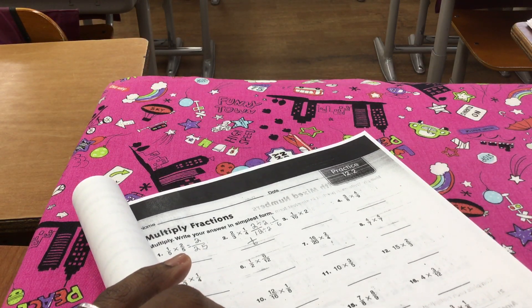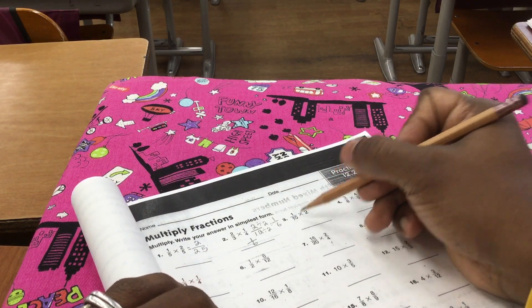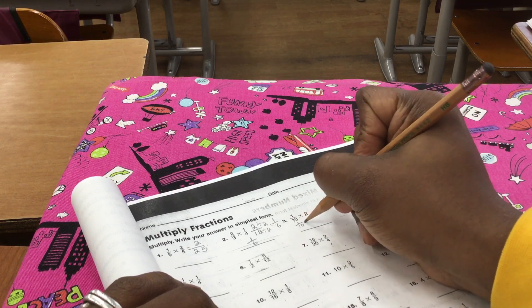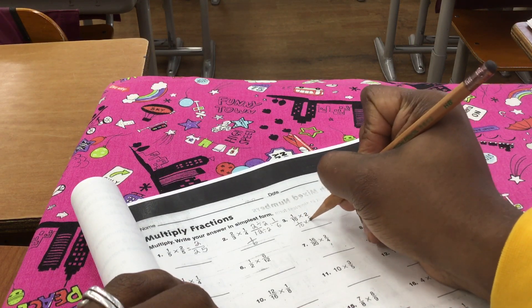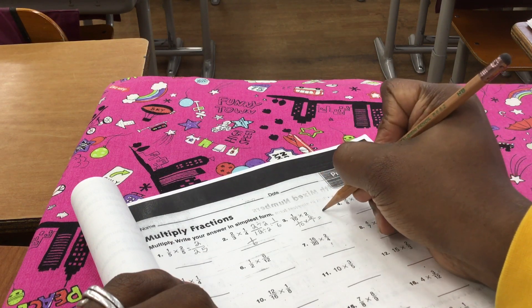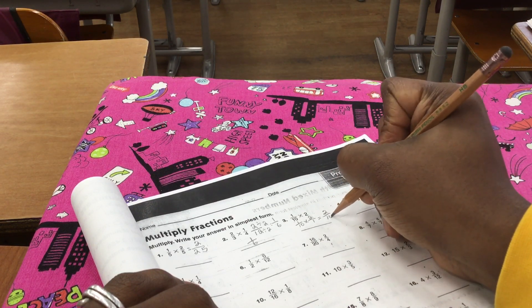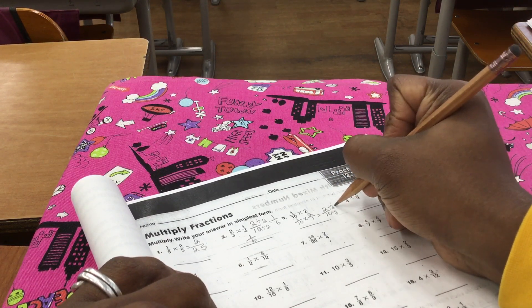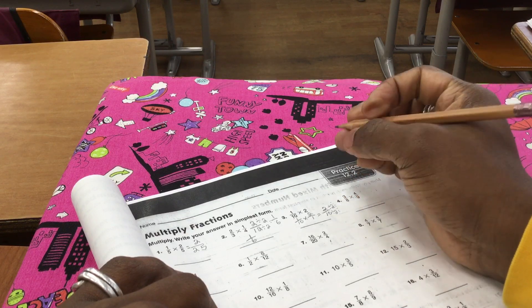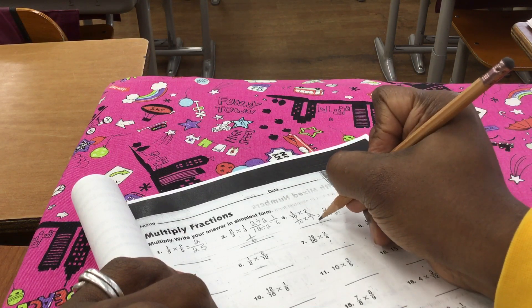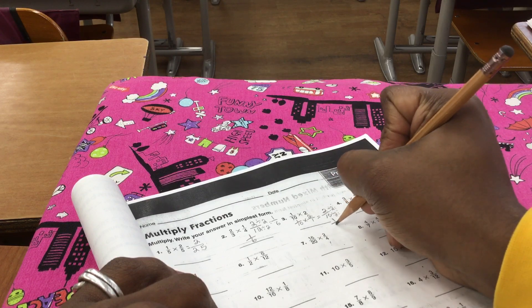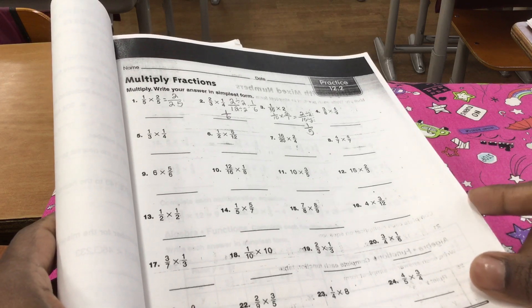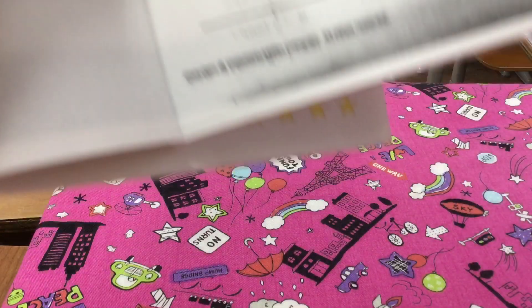Remember what I said to do for a fraction and a whole number. One-tenth times two. That's going to give us one-tenth times two over one. And that's going to give me two-tenths. I can simplify, divide the numerator and denominator both by two. That's going to give me one-fifth. That's my answer. Just work through all the problems. It's nice and easy. Pretty straightforward.